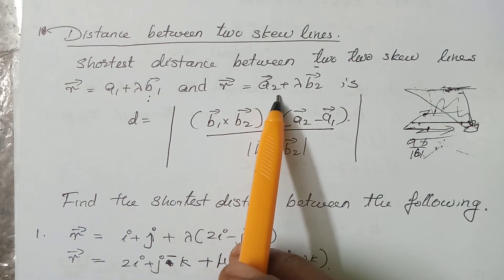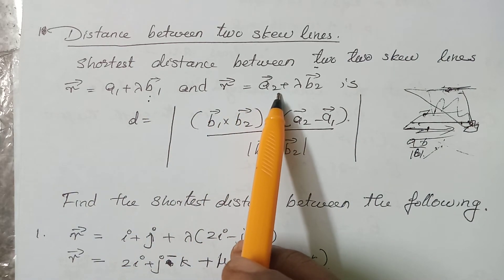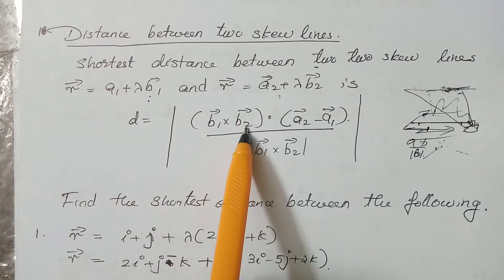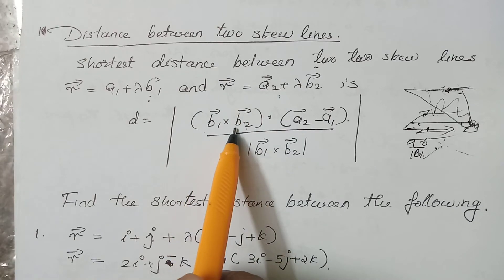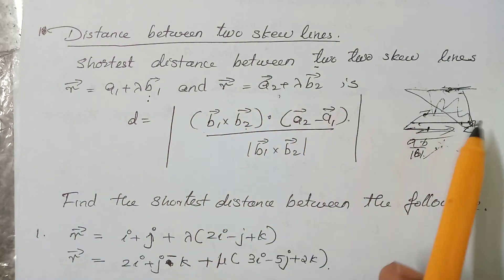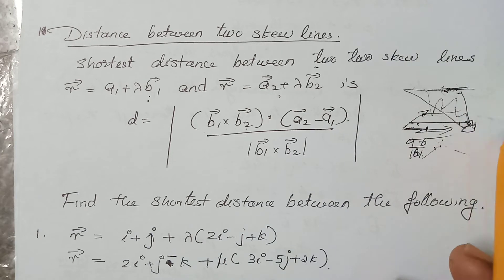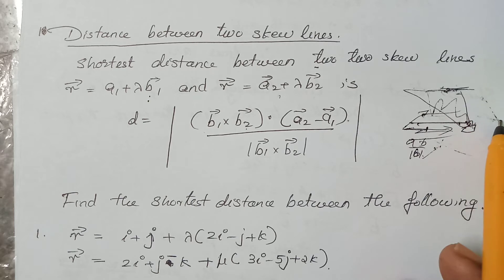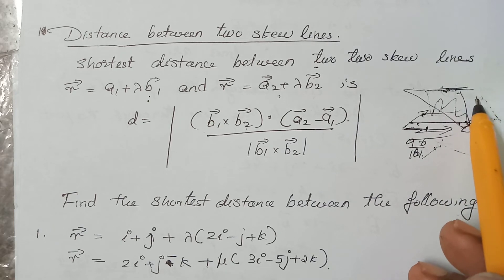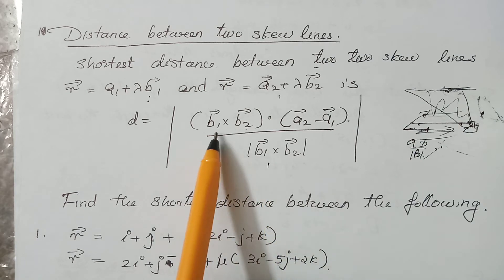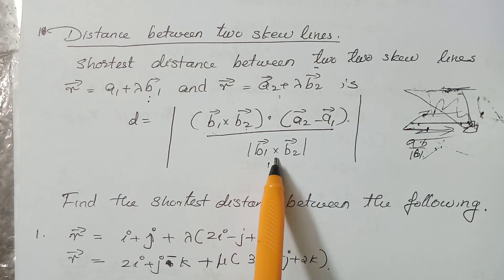We have two vectors in the perpendicular line. We can use B1 and B2 in the mutual perpendicular line. If B1 and B2, the points are A2 minus A1. Then the projection is A2 minus A1. B1 and B2 gives A2 minus A1 by modulus of B1 cross B2.